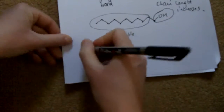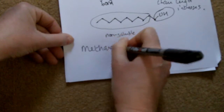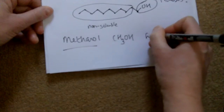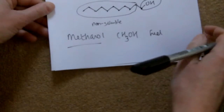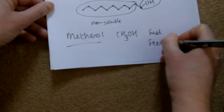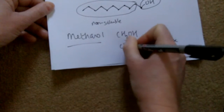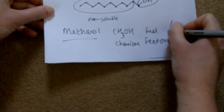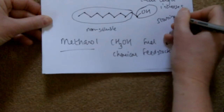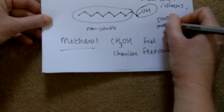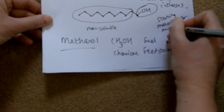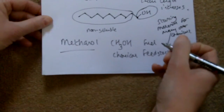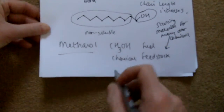The last thing to mention is methanol, which is a key chemical. It is used as a fuel because it burns very well. It is also used as a chemical feedstock — meaning it is the starting material on an industrial scale for the production of many other chemicals, such as polymers and various other substances.